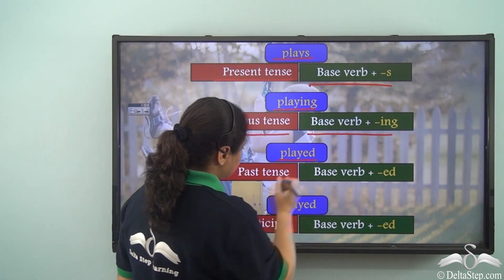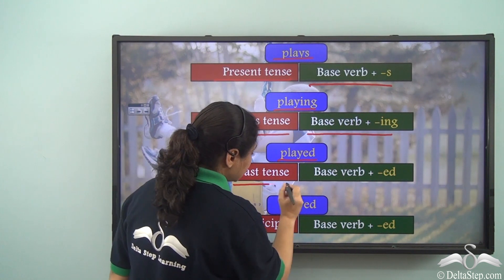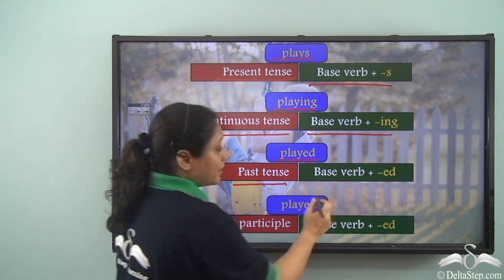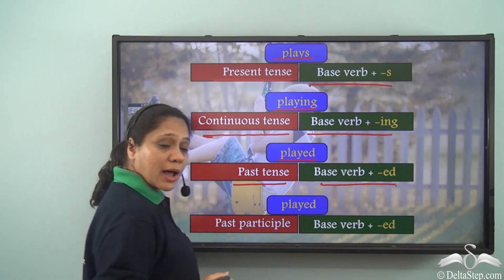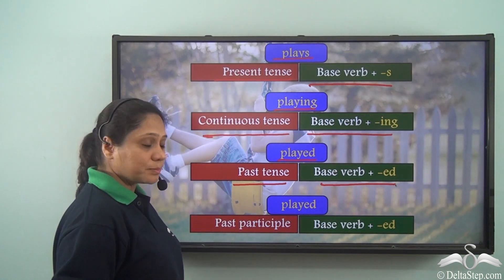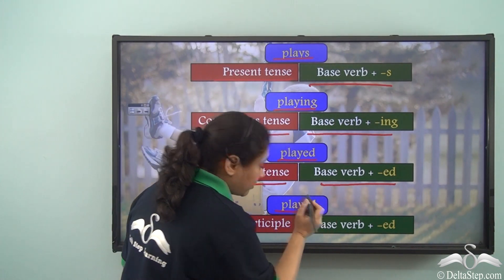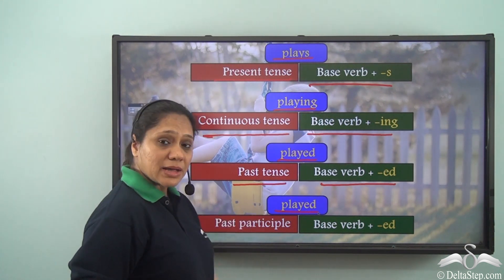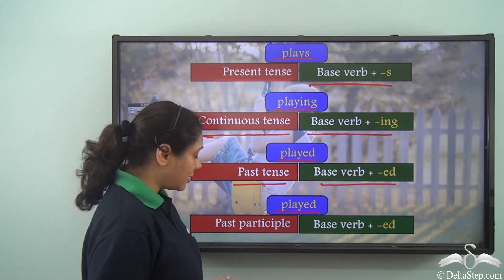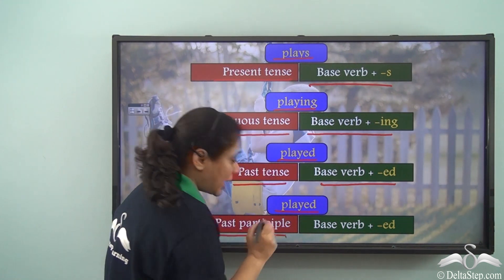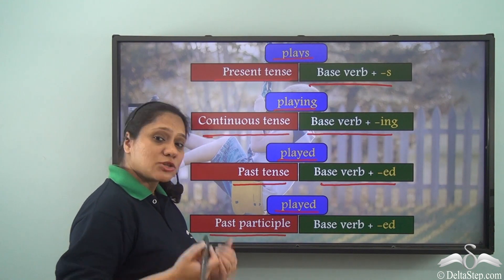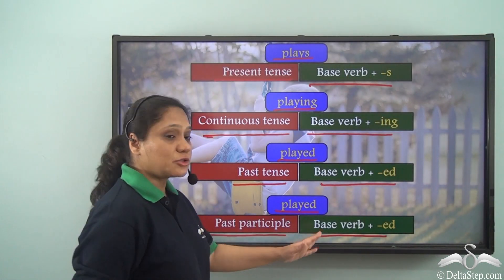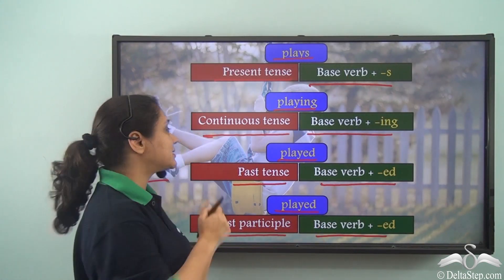The form 'played' is the past tense form, formed by adding '-ed' to the base verb. Another form is 'played', which is the past participle form, and it has also been formed by adding '-ed' to the base verb.